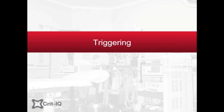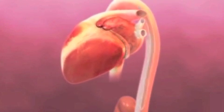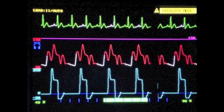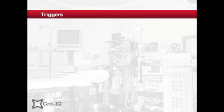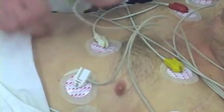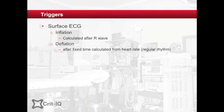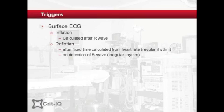To effectively assist the circulation, the pump needs to know when to inflate and deflate. To do so, a reliable physiological marker of the start and end of diastole is required. This is known as triggering. Traditionally, the surface ECG signals have been used. Inflation of the balloon is calculated from the R wave of the ECG, and deflation is triggered after a defined period if it's a regular rhythm, or by detection of a new QRS complex when the rhythm is irregular.